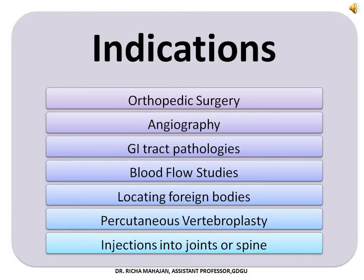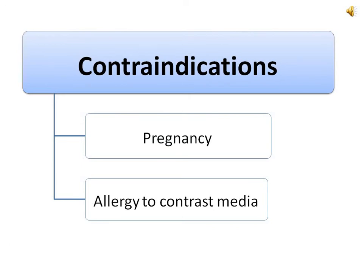The indications of fluoroscopy include orthopedic surgery, angiography, GI tract pathologies, blood flow studies, locating foreign bodies, percutaneous vertebroplasty, and injections into the joints and spine. The contraindications of fluoroscopy are pregnancy and allergy to the contrast media. If a female is pregnant, she should always inform her technologist. If an individual is allergic to the contrast media being used, the procedure of fluoroscopy is contraindicated.